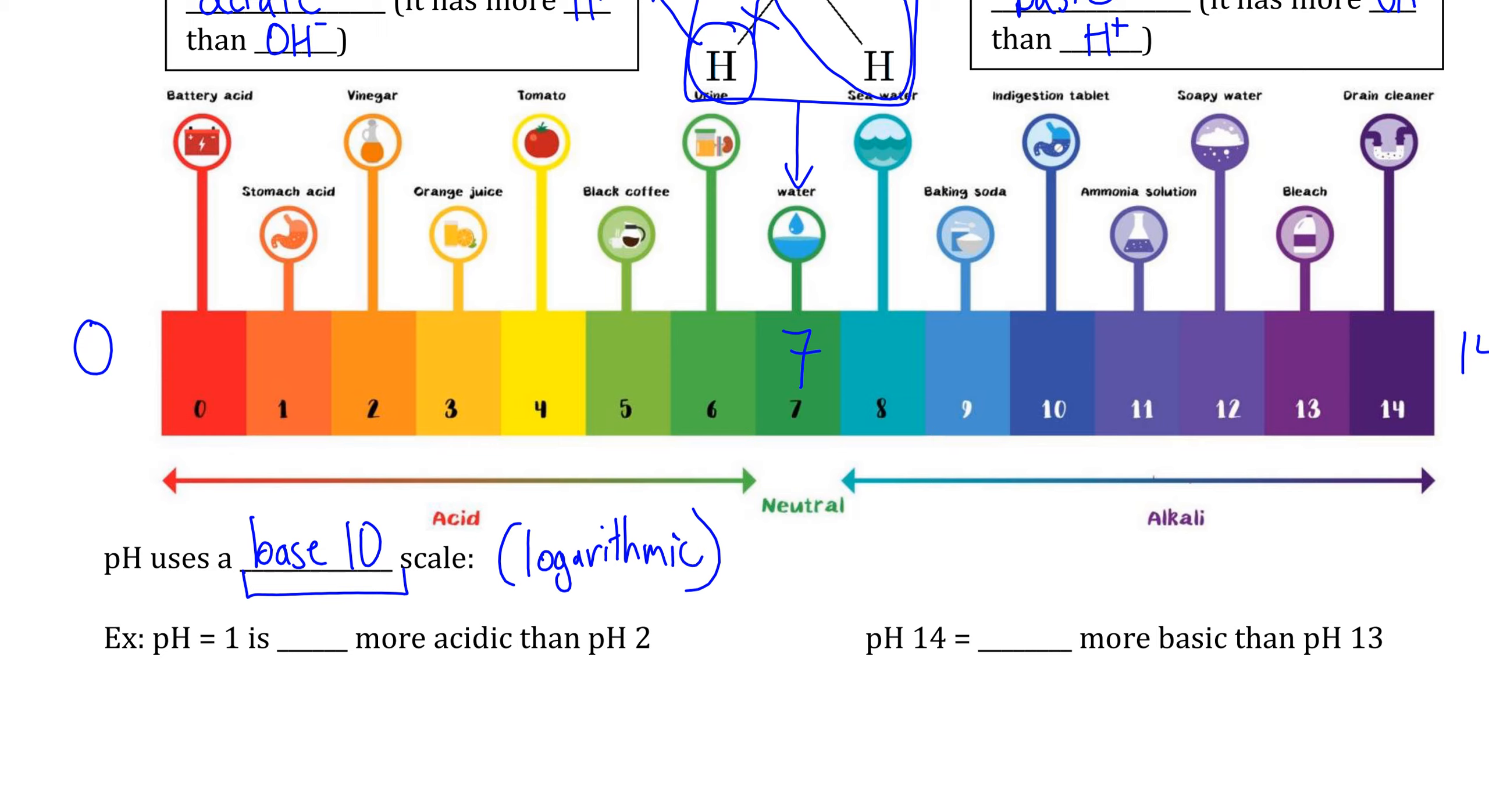We can use acid as an example. If we have an acidic solution with a pH of 1, with acids, the lower the pH is, the more acidic the solution is. So we can say that a pH of 1 is 10 times more acidic than a pH of 2, because when we go from 7 to 0, we get more acidic. Every time we change pH values, that means we are increasing how acidic we are by a factor of 10.